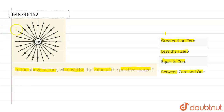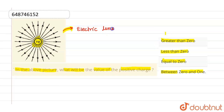Now if you look at this particular diagram, you will see that there is a positive charge, plus Q, from which electric field lines — or electric lines of force — are coming out. So obviously, the magnitude of charge will be greater than zero.